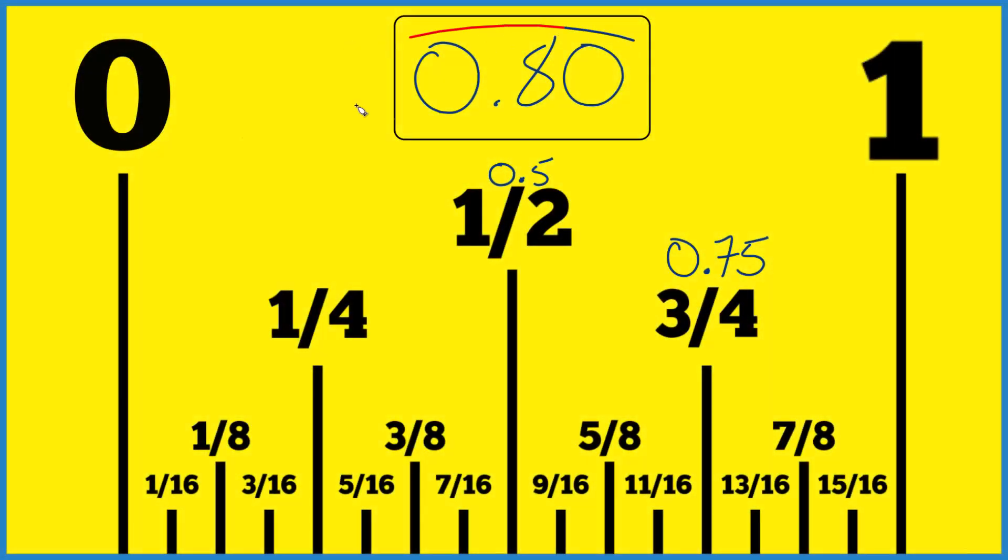So if you're trying to find 0.8 inches or 0.80 inches on a ruler or a tape measure, here's how you do it. We have our 0 to 1. This is all 1 inch here.